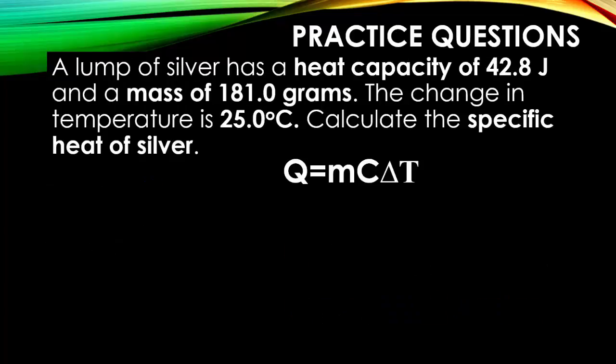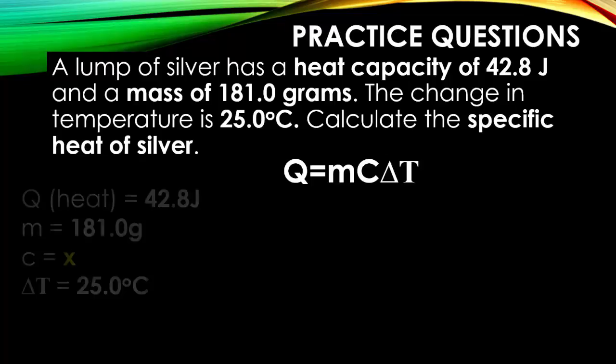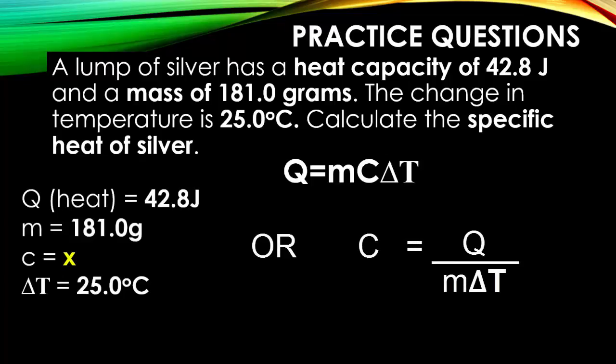A lump of silver has a heat capacity of 42.8 joules and a mass of 181 grams. The change in temperature is 25 degrees Celsius. Let's determine what the specific heat of silver is. Identify all the different variables that you have. You know that Q equals 42.8 joules. You know your mass is 181.0 grams. You're solving for your specific heat of silver. And you know the change in temperature is 25 degrees Celsius.